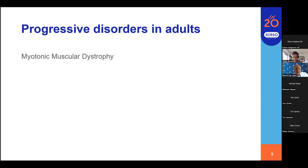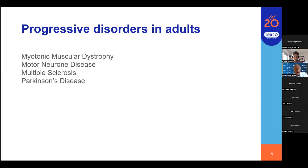Looking at the adult range, the most common is myotonic muscular dystrophy. We also have motor neurone disease, which can come on very quickly and lead rapidly to complete incapacitation. Multiple sclerosis is pretty common, as is Parkinson's disease. And old age itself — something I'm now in my seventies more appreciative of — is also a progressive disorder we'll all face in time, where things we can do today, next year we might not do so well.